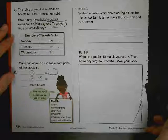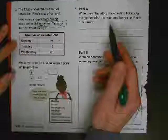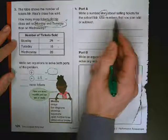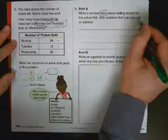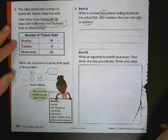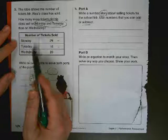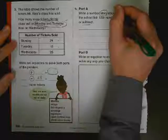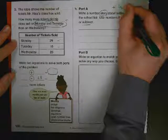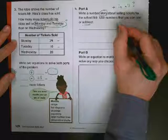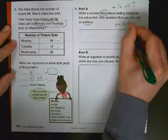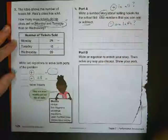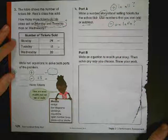So this says number story. Remember, if it says number story, you have to write a story. Selling tickets for the school fair, use numbers that you can add or subtract. So you can add or subtract, it does not matter. You have to write a story. So it could be something as simple like on Monday they sold 24 tickets, on Tuesday they sold 18 tickets, how many in all? If it's plus. In all. If you want to do subtraction, how many are left? That's subtraction.